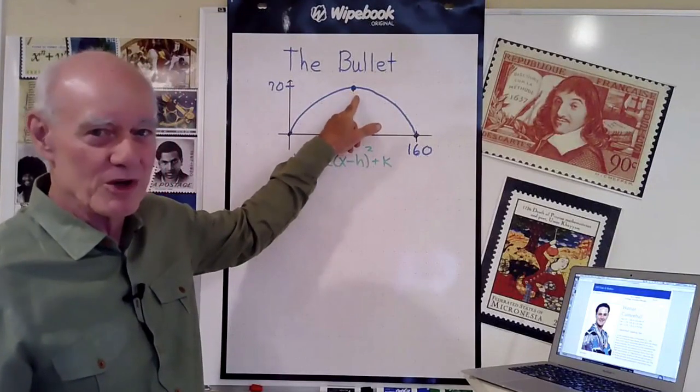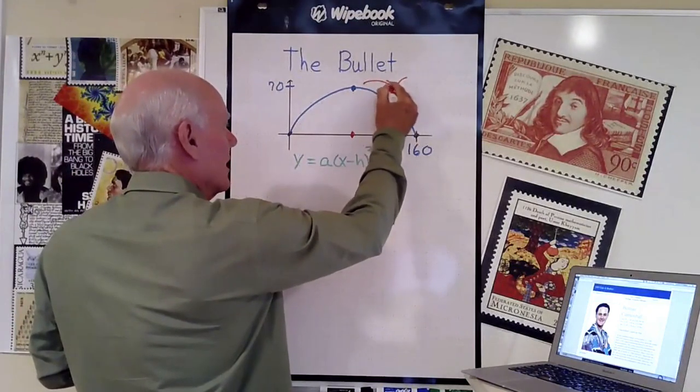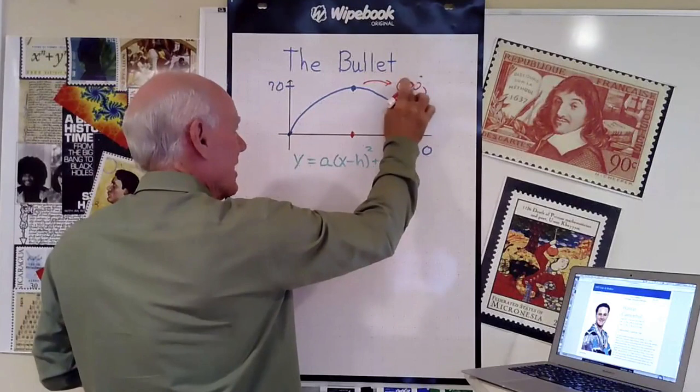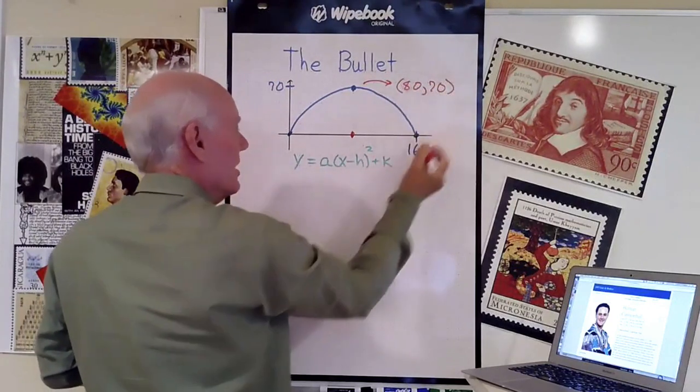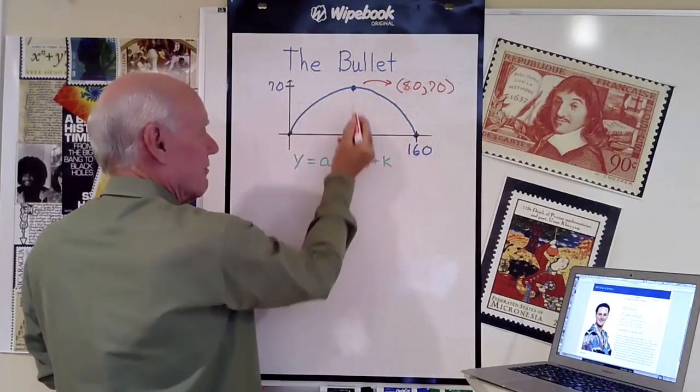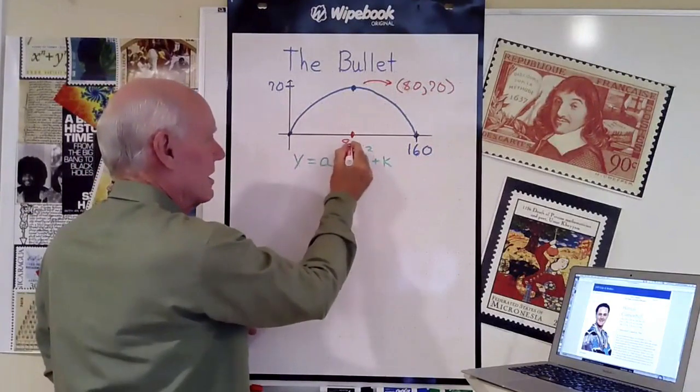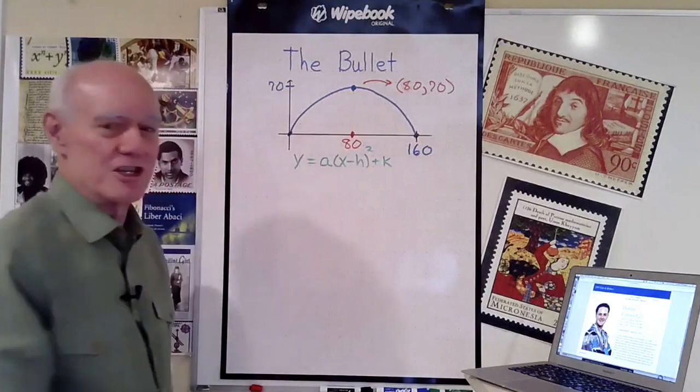What are the coordinates of that point? That point has coordinates x equals 80, y equals 70. Because if he goes from here to here, and that's 160, the vertex will appear halfway at 80 feet. So when x equals 80 and y equals 70, we get the vertex of that parabola.